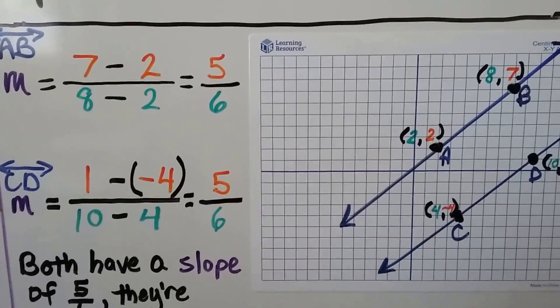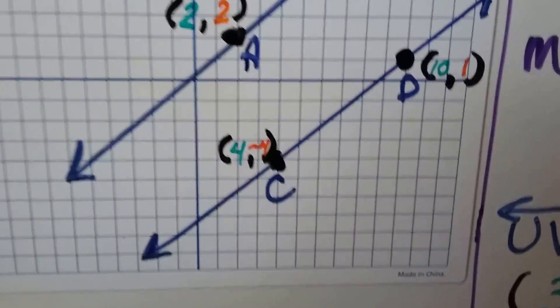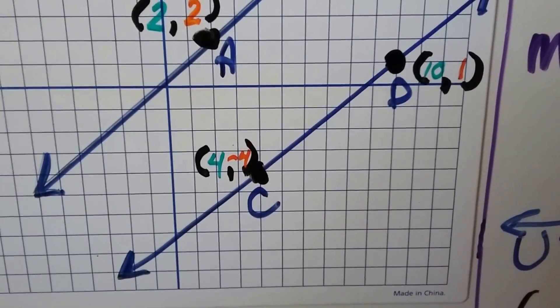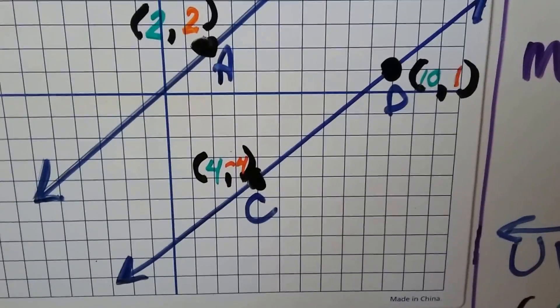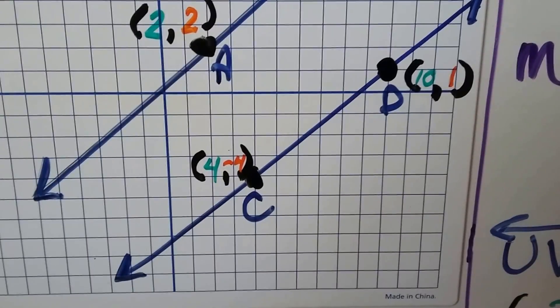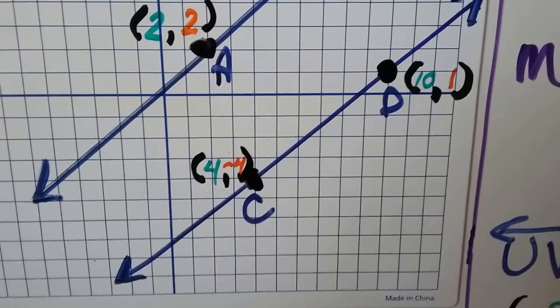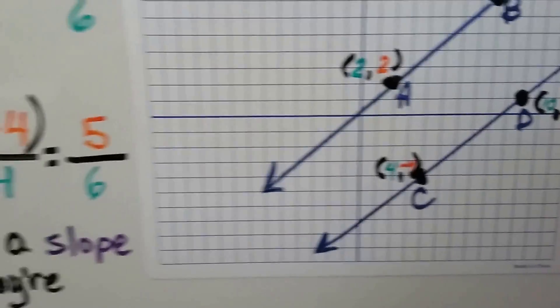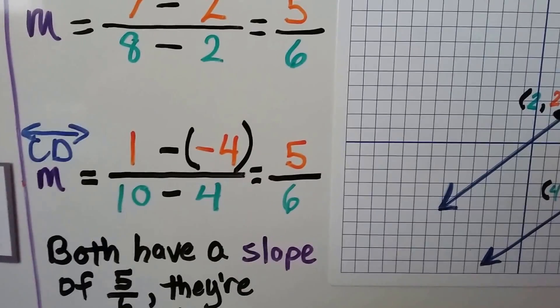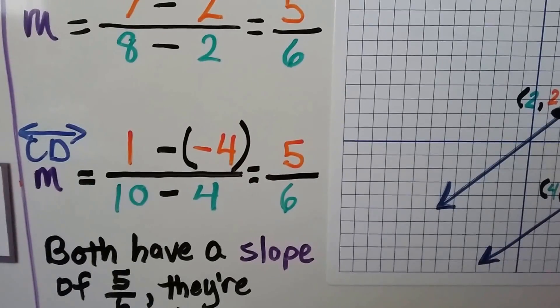For line CD, we look at the points. C is at 4 for x and -4 for y. D is at 10 for x and 1 for y. So we're going to do 1 - (-4) over 10 - 4. 1 minus negative 4—we're subtracting a negative, so we add the opposite. We get a positive 5, and 10 - 4 is 6.